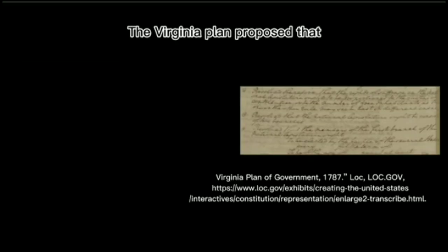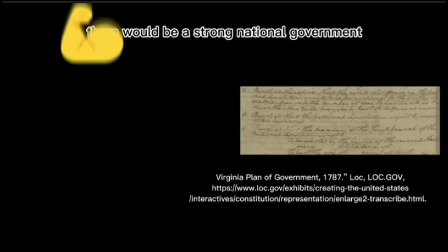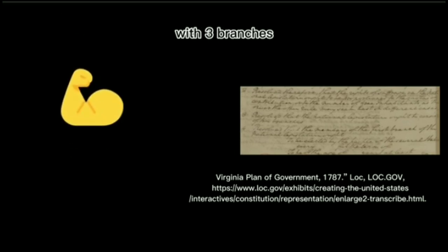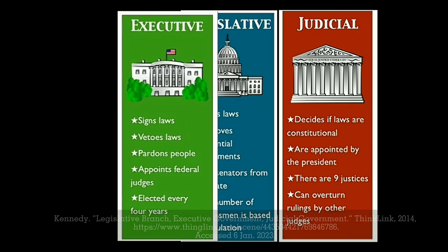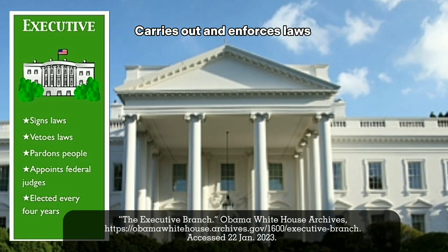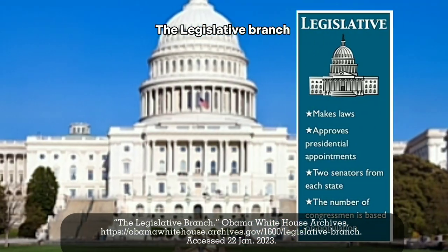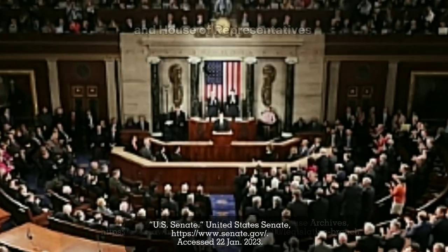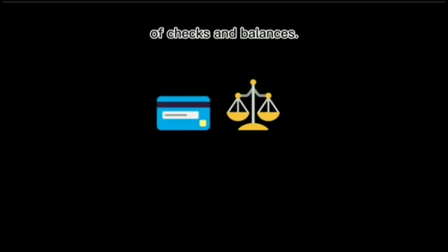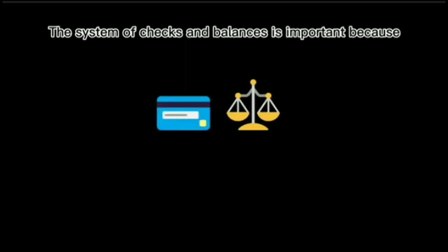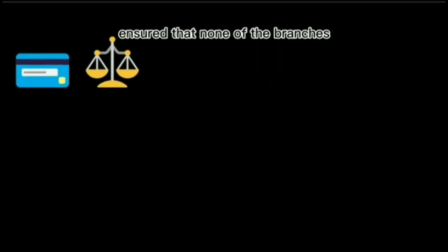The Virginia Plan proposed that there would be a strong national government with three branches: judicial, legislative, and executive. The executive branch carries out and enforces laws. The legislative branch consists of the Senate and House of Representatives. The Convention also brought the great idea of checks and balances. The system of checks and balances is important because it ensured that none of the branches could hold more power than another.